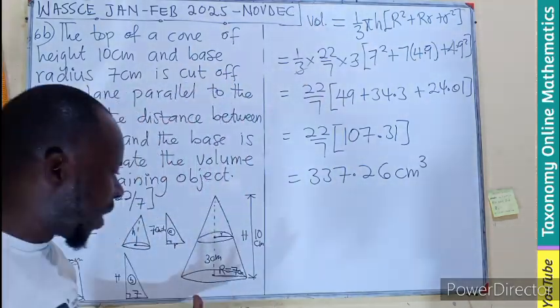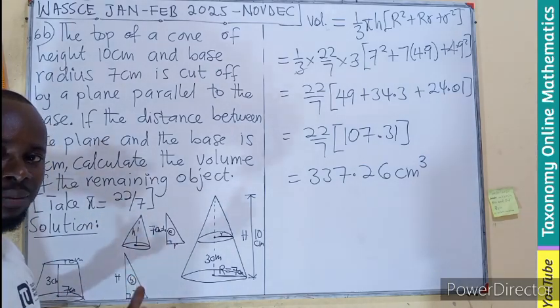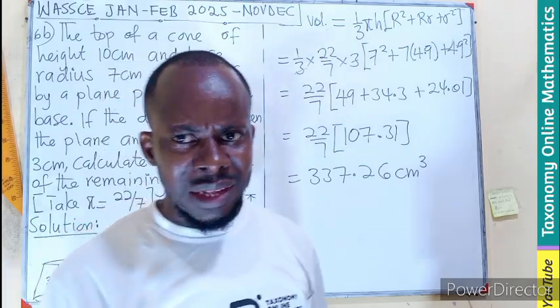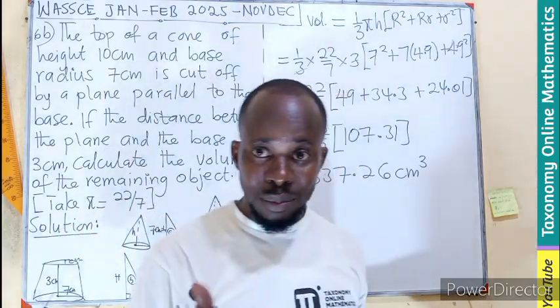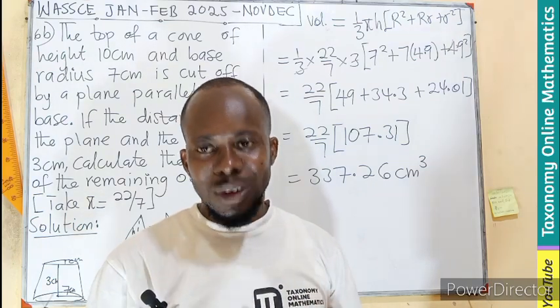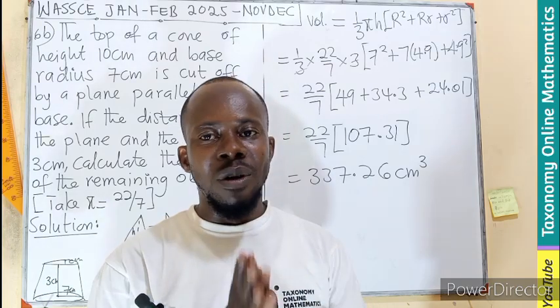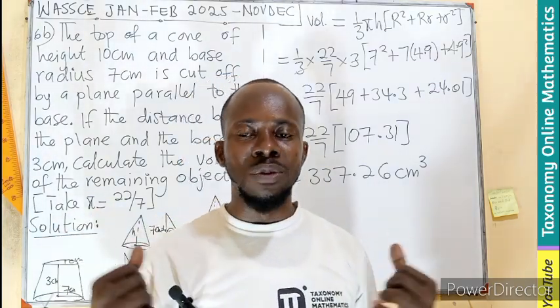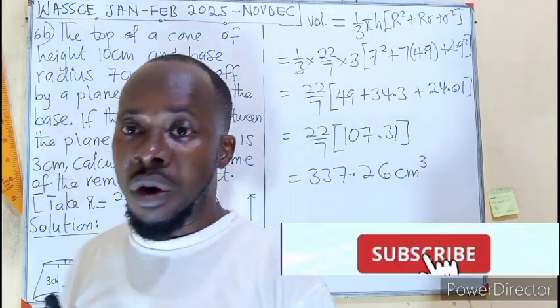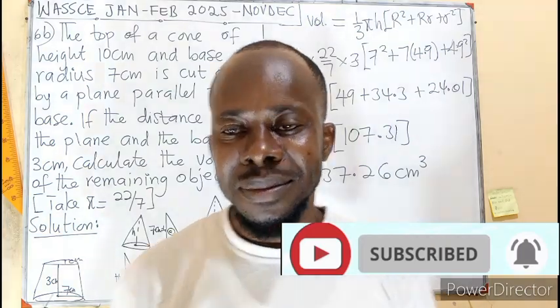I understand the question is simple for you. If not, check the playlist on mensuration 2. Look for how to find the volume, how to derive the volume of the frustum. And I'm sure you will get a tutorial, the in-depth understanding of how these formulas and all of them came about. Like, share, comment, and subscribe. Thank you.